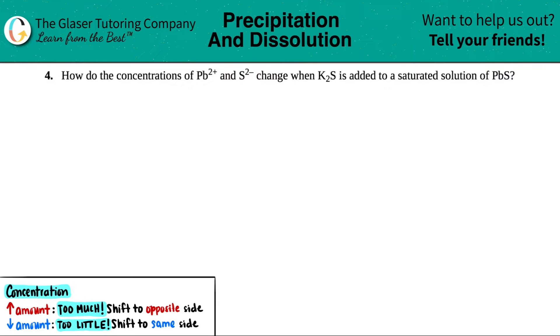Number four, how do the concentrations of Pb²⁺ and S²⁻ change when K₂S is added to a saturated solution of PbS?